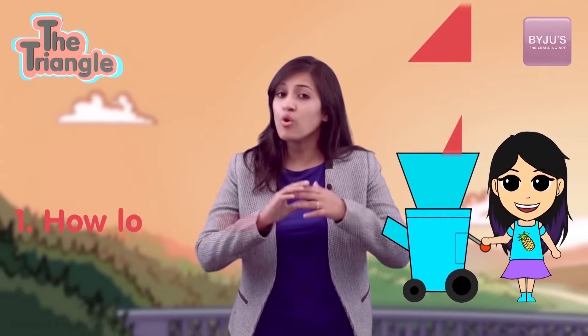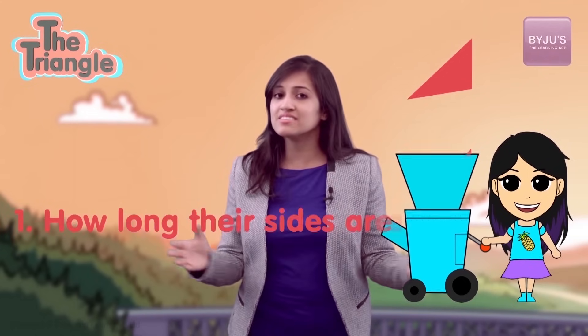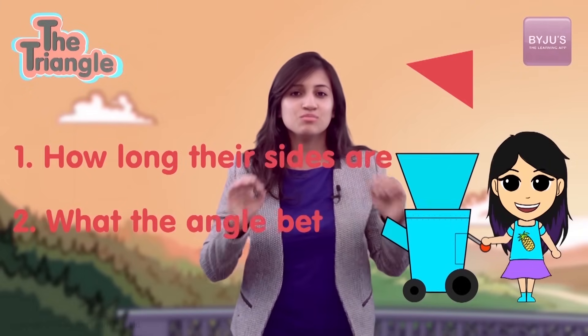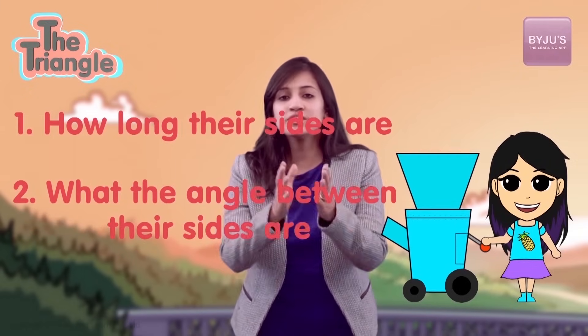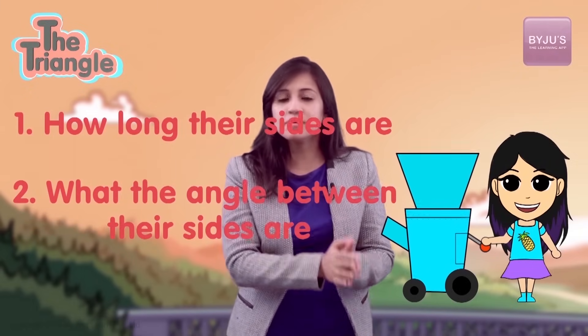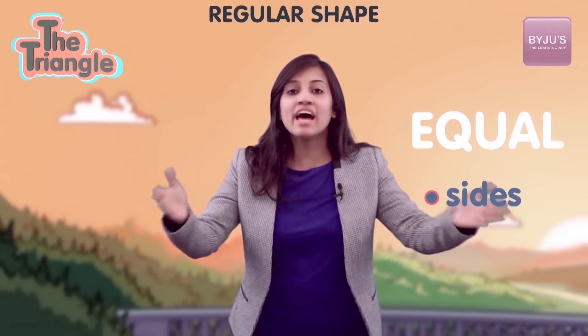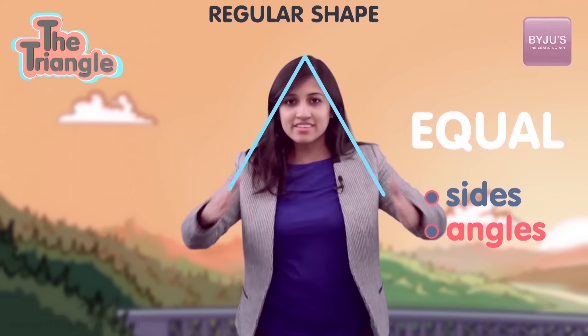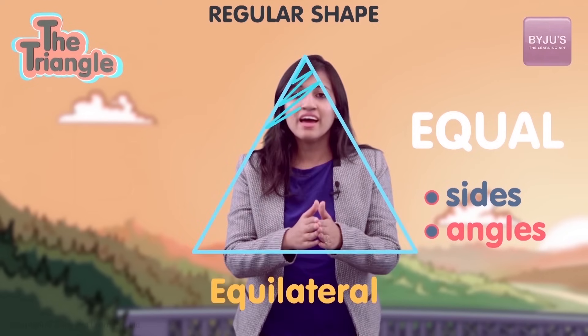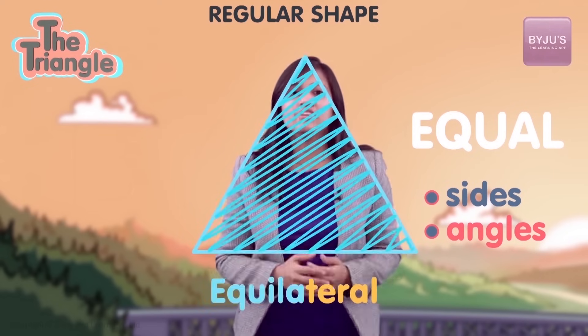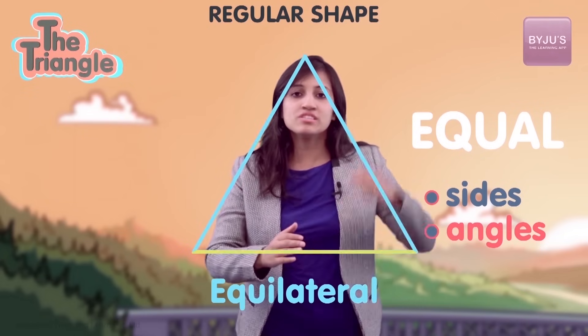To put order to this chaos, mathematicians said: let's classify triangles based on just two things — how long their sides are, and what the angles between the sides are. Let me start with an example that covers both. First, a perfect regular shape — we've got to have one for triangles also — with all equal sides and all equal angles.